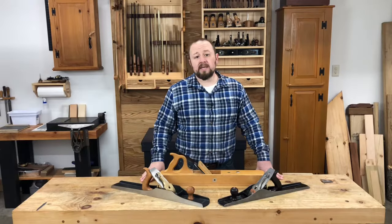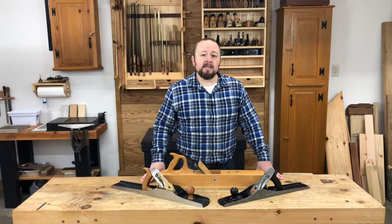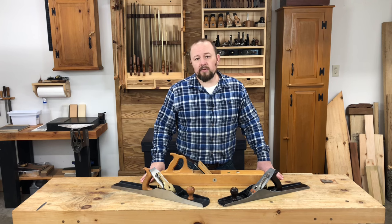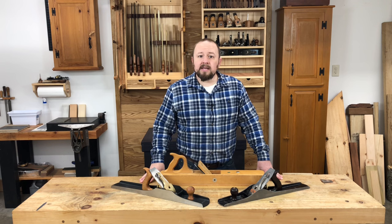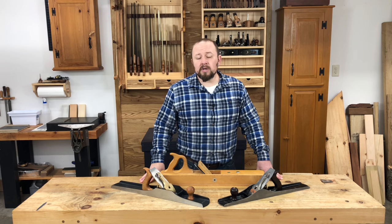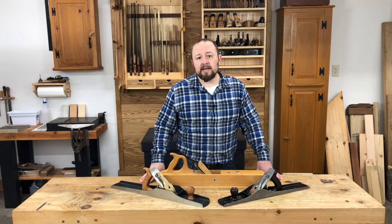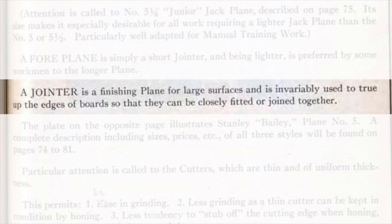Once we get to the 1898, 1914, and 1934 Stanley catalogs, the term triplane is lost again. Stanley refers to both their number 7 and their number 8 planes as jointer planes, saying: 'A jointer is a finishing plane for large surfaces and is invariably used to true up the edges of boards so that they can be closely fitted or joined together.'